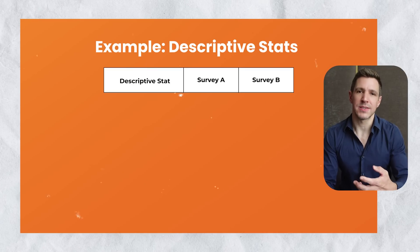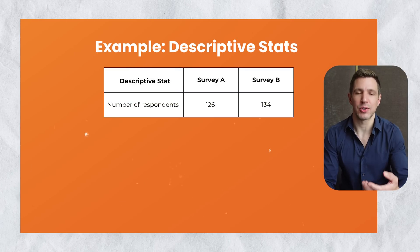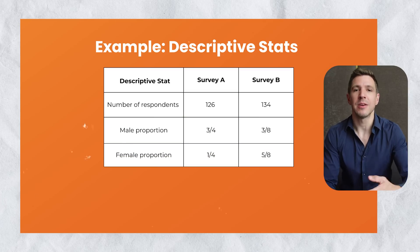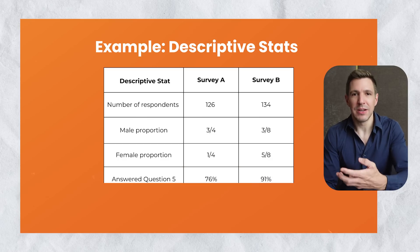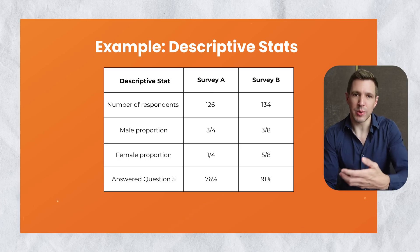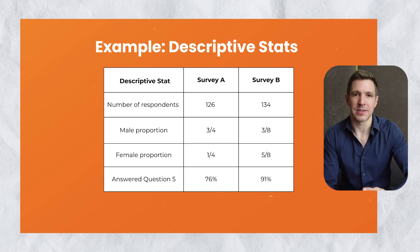This probably sounds a bit conceptual, so let's take a look at some examples. A basic descriptive statistic could be something as simple as a count of the total number of survey participants — in other words, your sample size. Taking it a step up from there, the proportion of males and females within that survey sample would be another descriptive statistic. Similarly, you could calculate the percentage of people that answered a specific question within the survey, and that too would be a descriptive statistic as it describes an attribute of your data set.